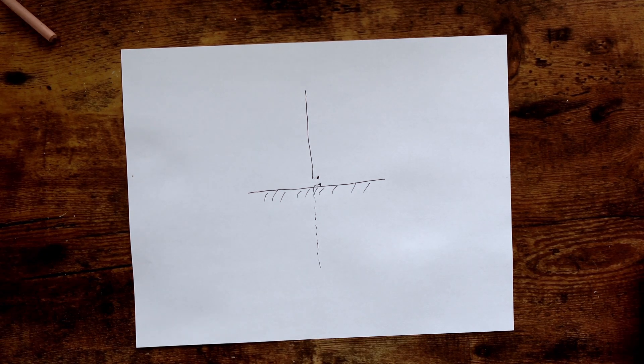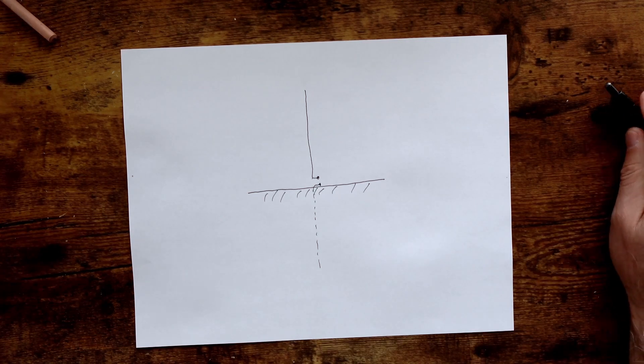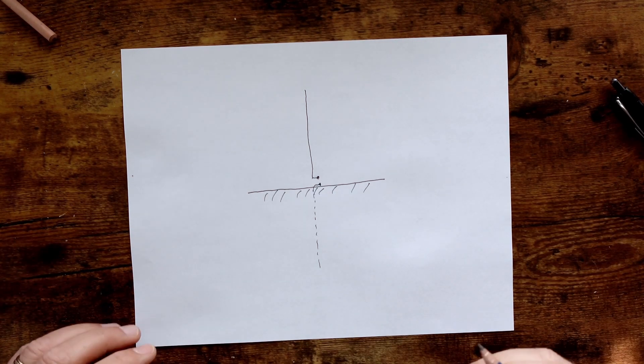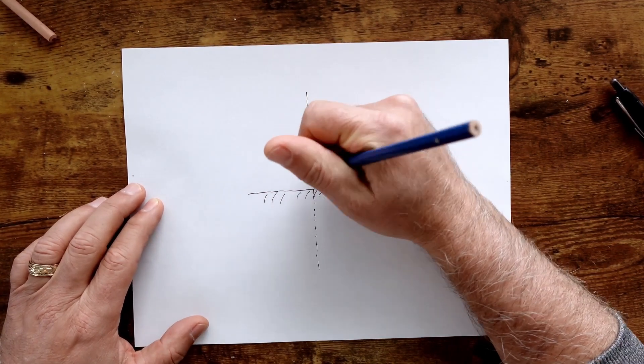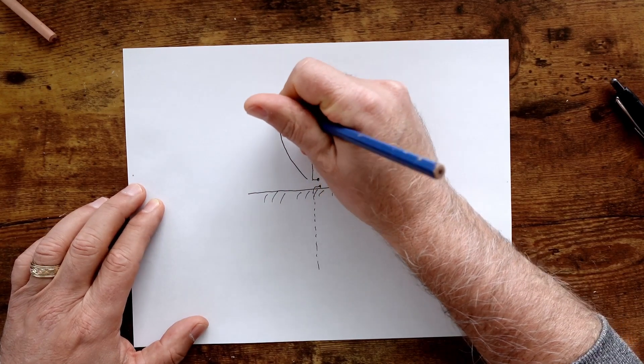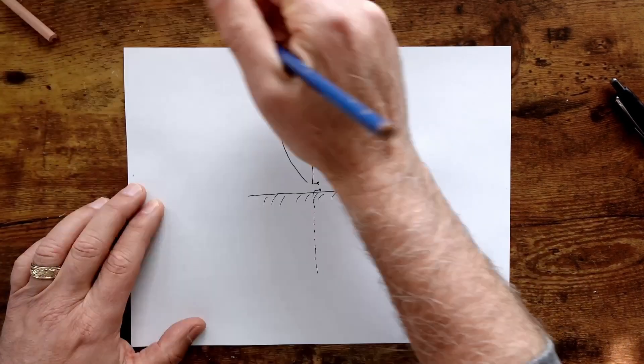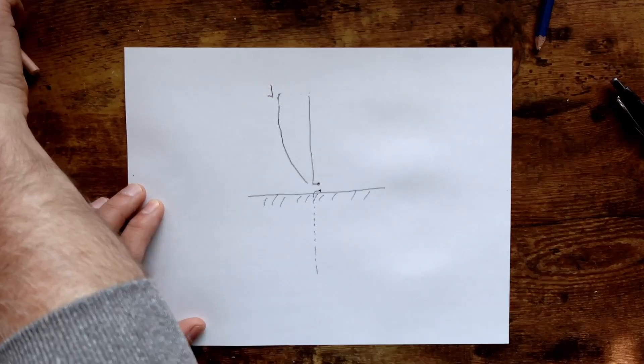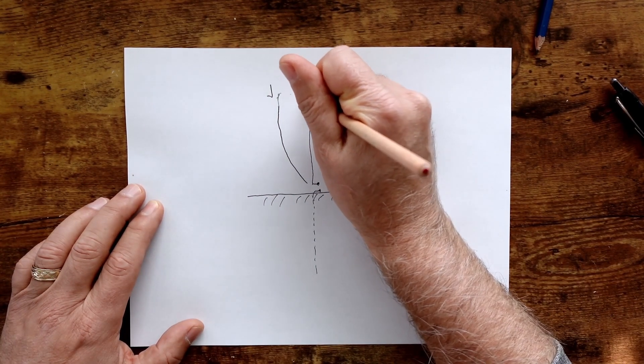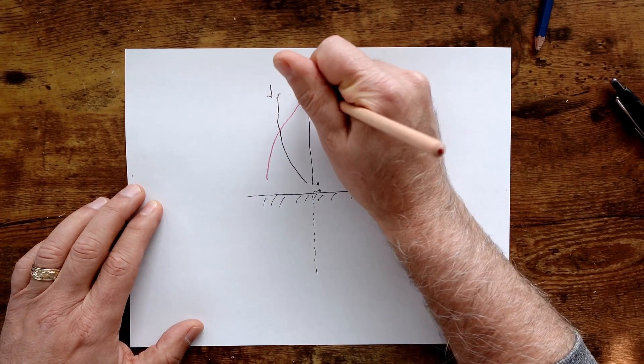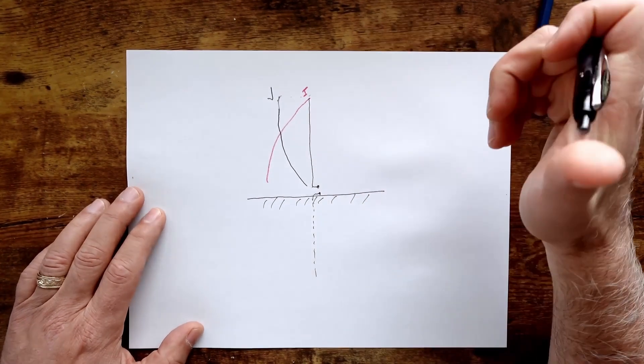And so if you're feeding the antenna here at this point, basically your voltage is going to look like this. So you're going to have minimum voltage at the feed point, and you're going to have maximum voltage at the end of the antenna. And we're going to call this V. And then your current is going to be minimal at the end and max at the feed point.